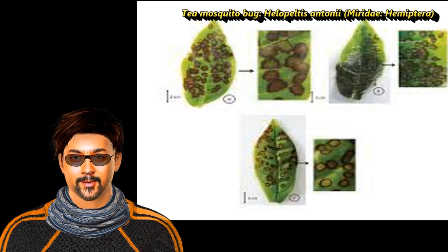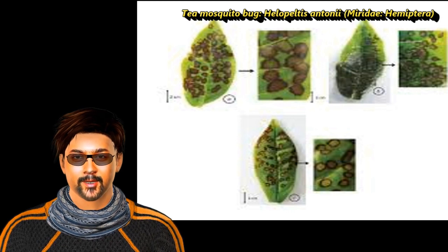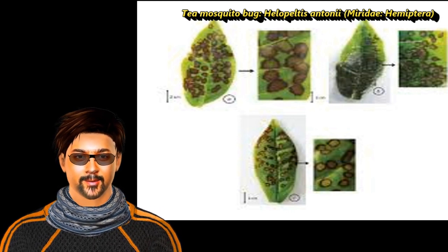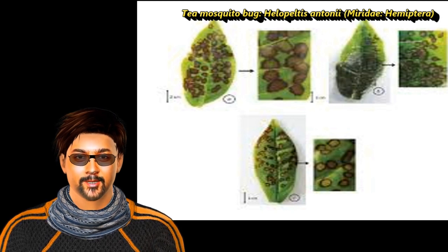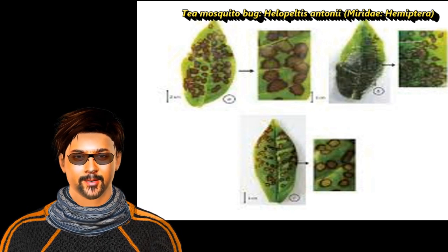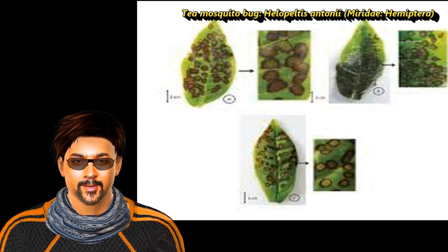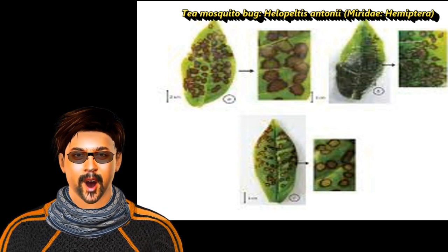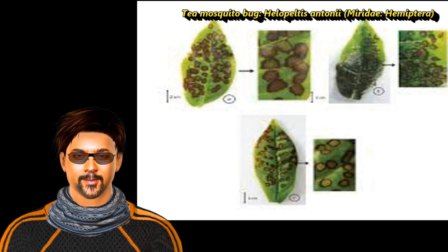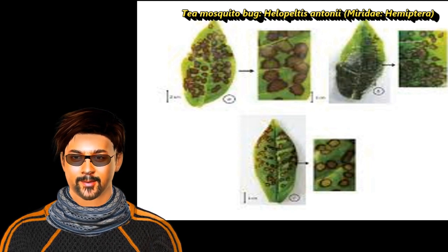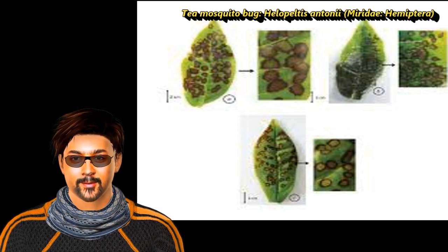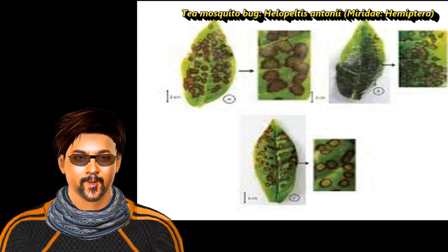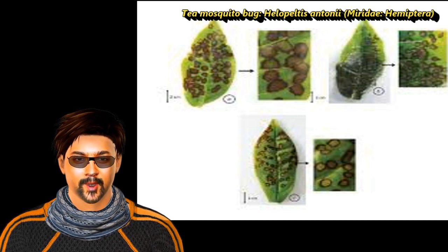Regarding life stages, the female inserts 32 eggs into the epidermis of tender shoots, axis of inflorals, and tender fruits. The egg period is about 8 days. Eggs are elongated and slightly curved with a pair of filamentous appendages. The nymph period is about 14 to 16 days.